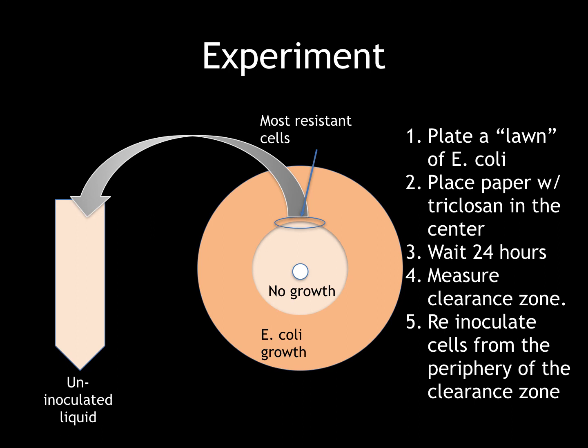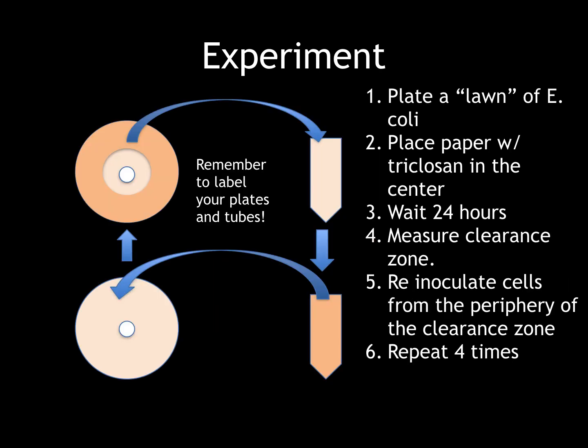This un-inoculated liquid will be re-inoculated with cells from the periphery of the clearance zone. Finally, we will be repeating this entire procedure four times in the hope of evolving our E. coli species over these four generations. And a final reminder: it is important to label your plates and tubes to ensure that we're keeping everything straight.